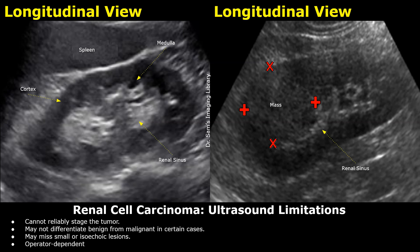Hello everyone, this is Dr. Sam and today we will learn about ultrasound findings of renal cell carcinoma. Renal cell carcinoma is the most common malignant tumor of the kidney in adults, and ultrasound is often used as a first-line imaging modality.